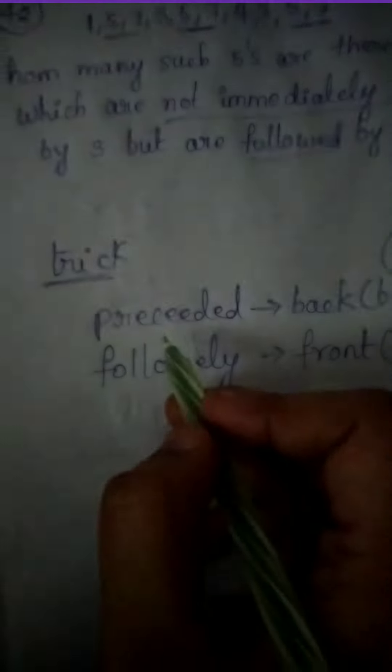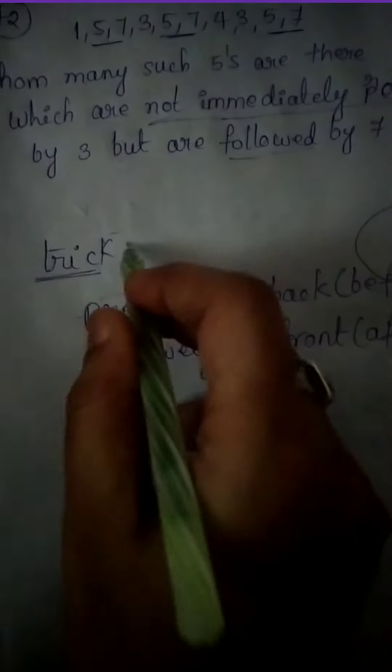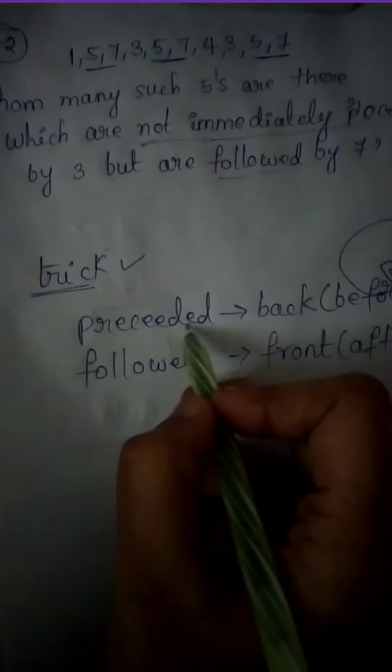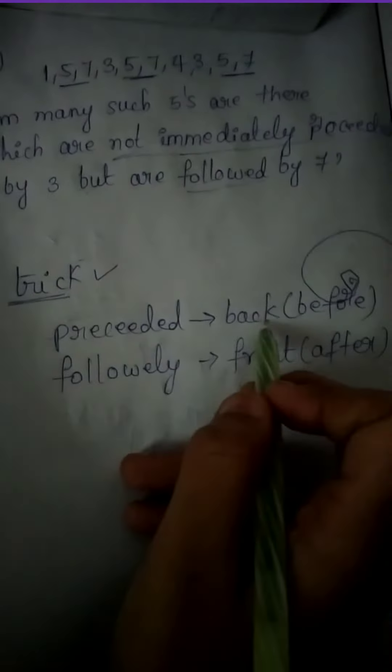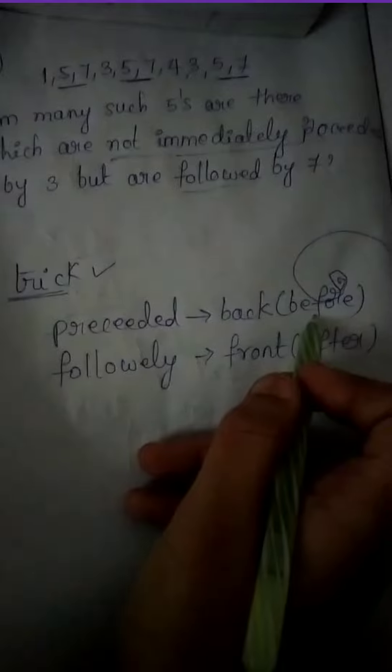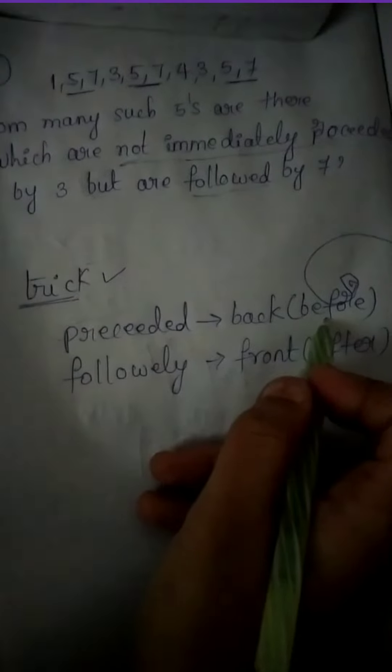How many files are there which are not immediately preceded but followed by 7 and 8? Not immediately preceded and followed by 8. Immediately preceded and followed by 8. So, I am looking at the trick. Preceded is back. I am looking at the back.